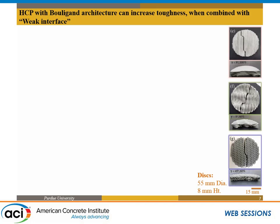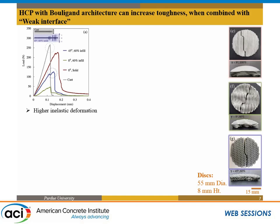Comparing these architectured elements with cast, starting at low displacement, you already see additional inelastic deformation. For the Bouligand architectures, when you test them, you can actually hear the crack — indicating additional energy is being absorbed. The linkage between elements breaks away without the whole structure failing, which postpones catastrophic failure, allowing the material to deform more without sacrificing strength.